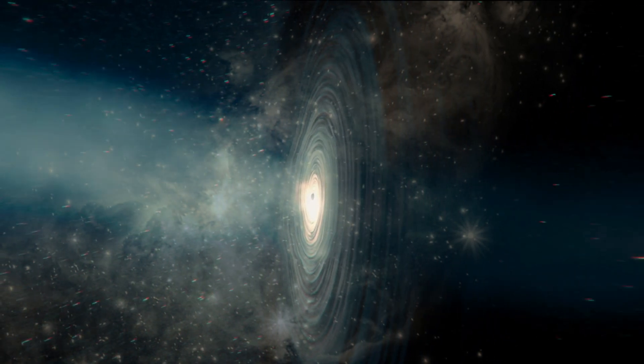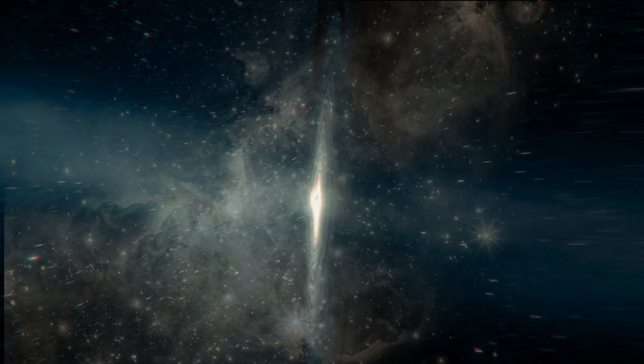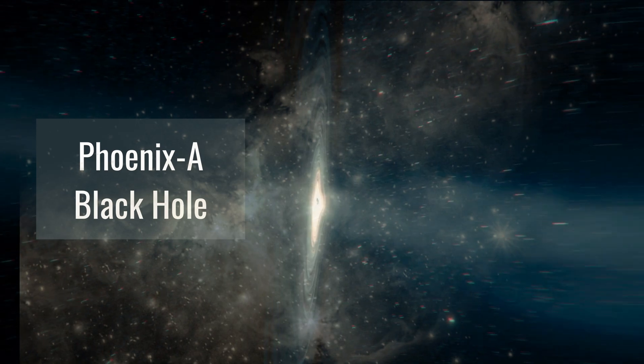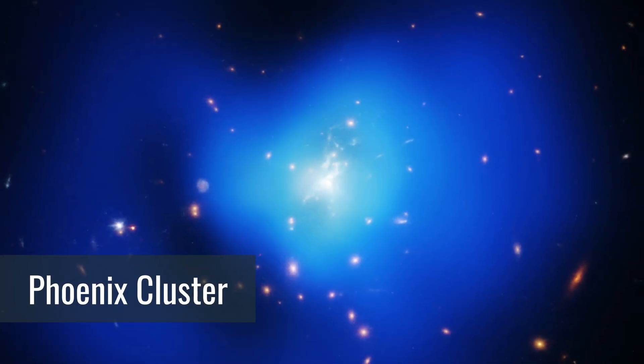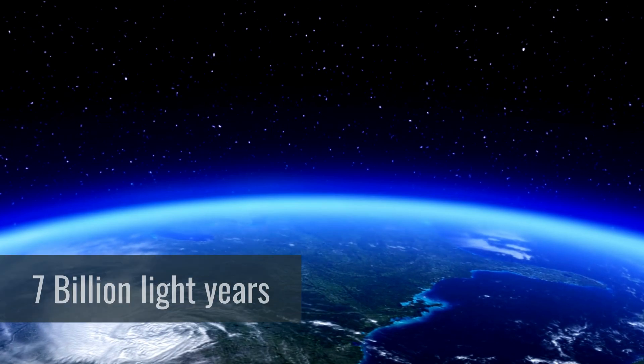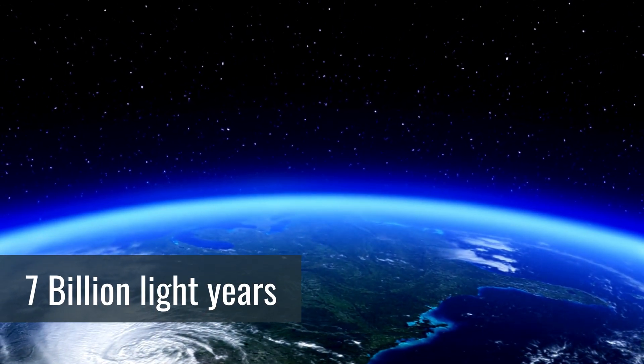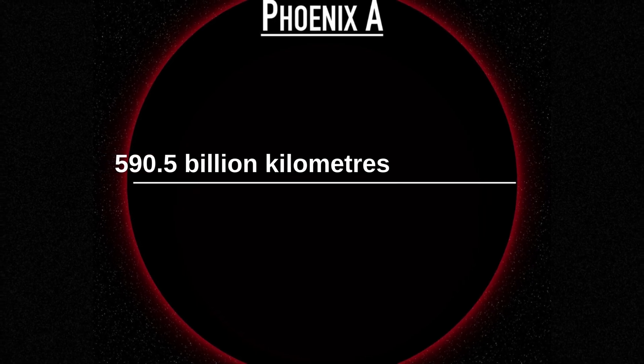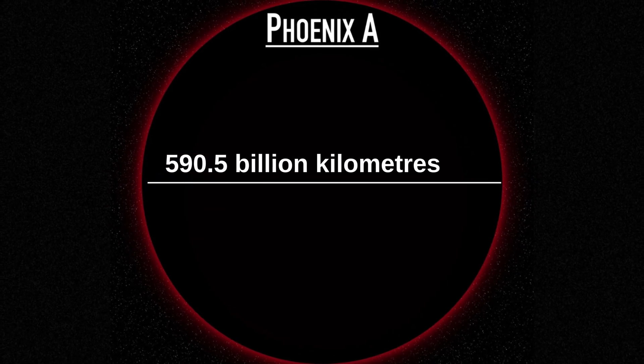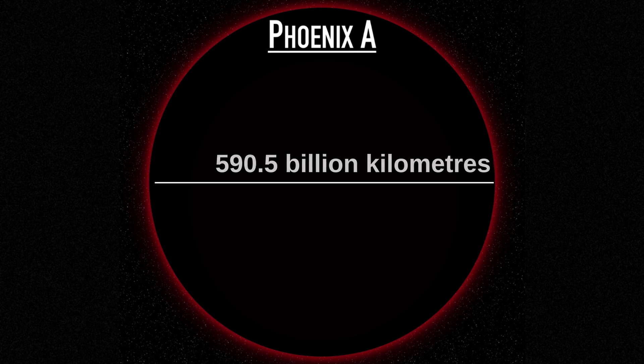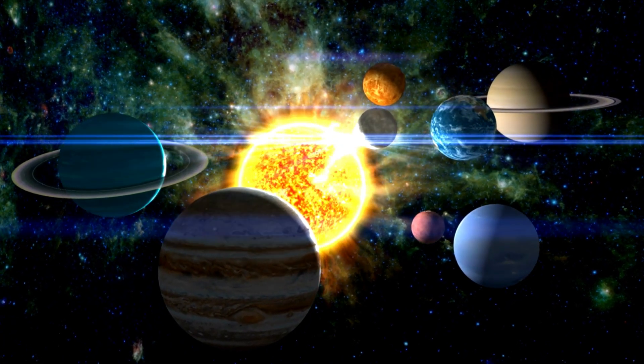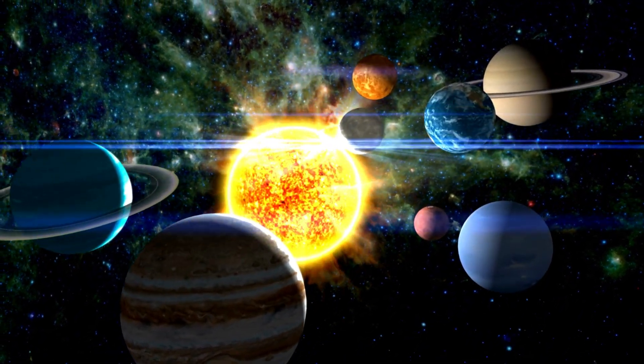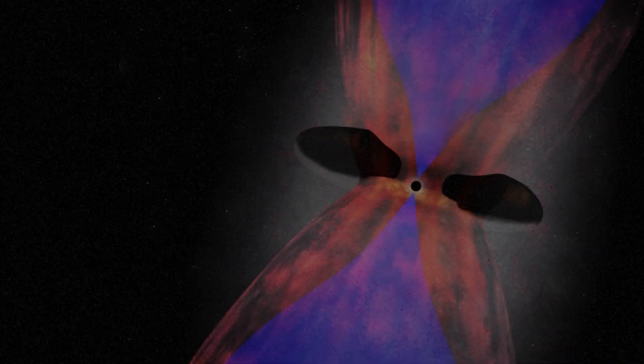The largest and most massive black hole ever discovered is Phoenix A, which lies in the heart of the Phoenix Cluster. Phoenix A is approximately 7 billion light years away from Earth. The diameter of Phoenix A is 590.5 billion kilometers. It is so big that many solar systems can fit into it all at once.